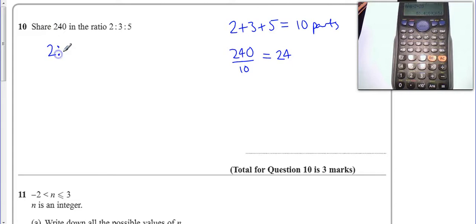So when I share the ratio 2 to 3 to 5, I need 2 lots of 24 in my first section, 3 lots of 24 in my middle section, and 5 lots of 24 here.